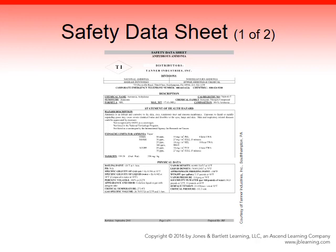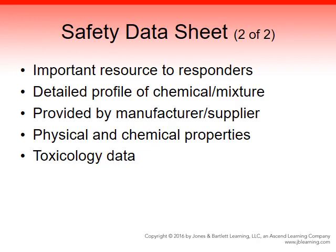A Safety Data Sheet contains important information including detailed profiles of the chemical mixture, safety actions, toxicology data, properties of the chemical, manufacturer and supplier information, and who to contact at the factory if something happens. For example, it will specify what a given chemical will do, how to mitigate it, and what treatment is needed for exposed individuals. SDSs are a great source of information.